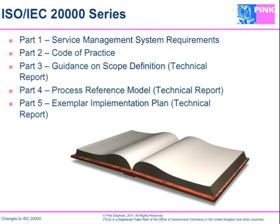Part 4 provides high-level overviews of processes in terms of purpose, context, references, and integration points, helpful to organizations as they think about how to design and implement processes per Part 1 requirements. Part 5 is the exemplar implementation plan. Organizations pursuing implementation of 20,000 as a standard of practice can turn to the implementation plan for guidance on that project.